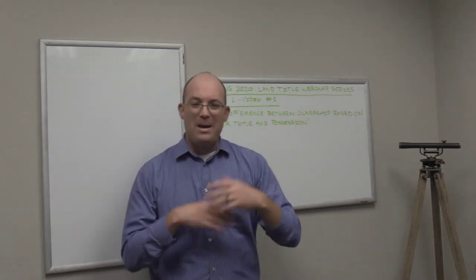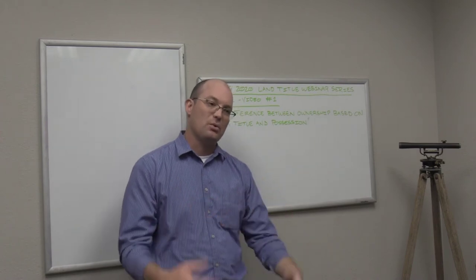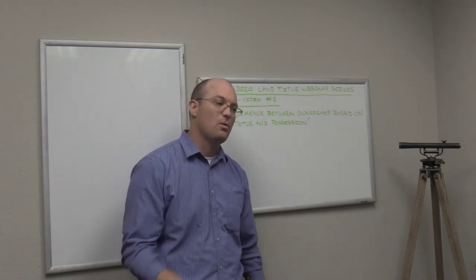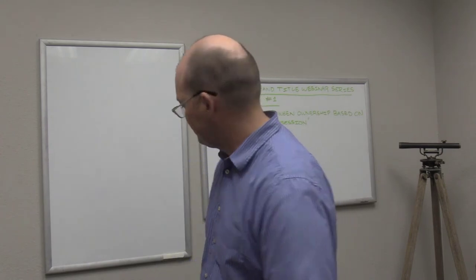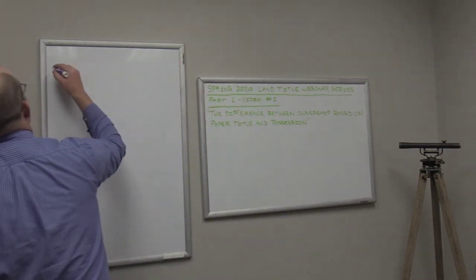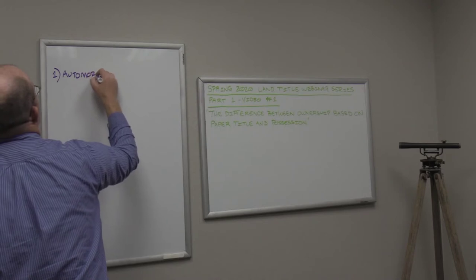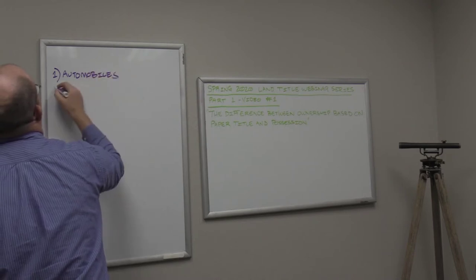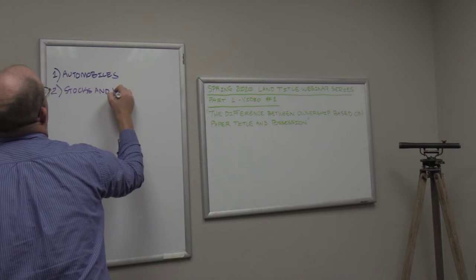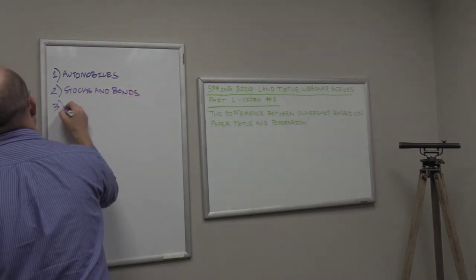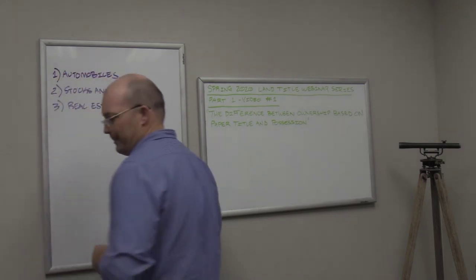A paper title system is one where you need legally recognized paper title to prove your ownership. There's two things that we do that for in the United States legal system primarily. Well there's more than two. Let's just write them down real quick. Here's some things that we do that with. We do that with automobiles and other expensive vehicles, jet skis and snowmobiles, that kind of thing. We do it with things like stocks and bonds and we do it with real estate. Let's talk about that a little bit, build on that thought, that concept. So automobiles.